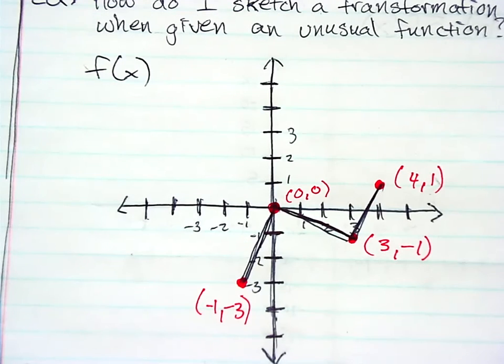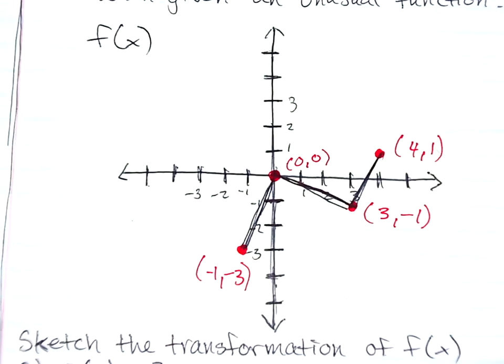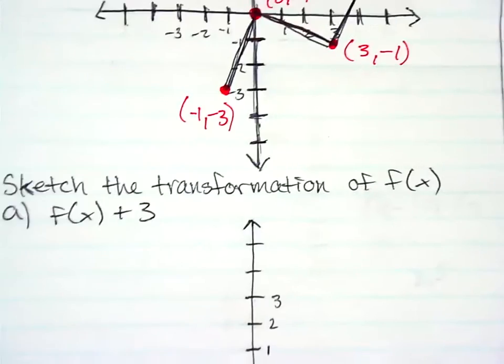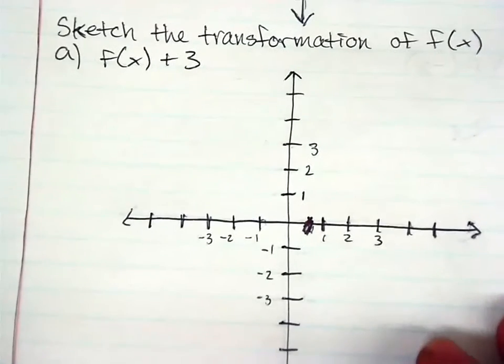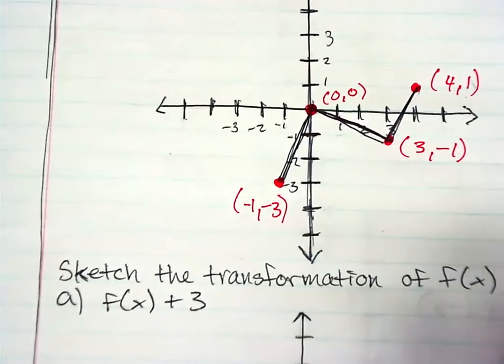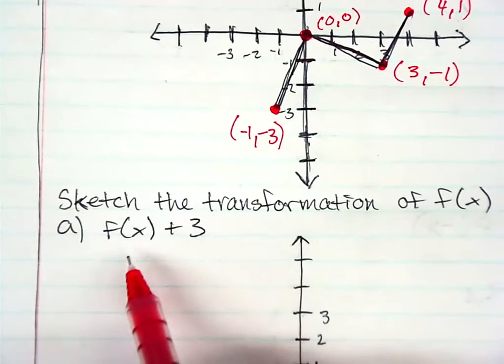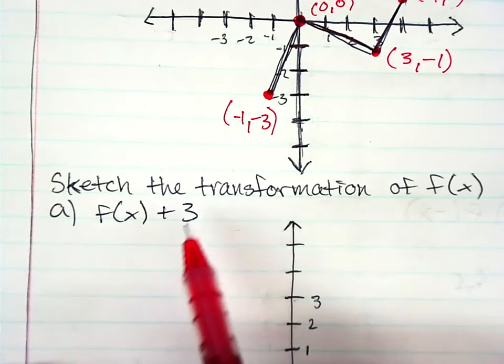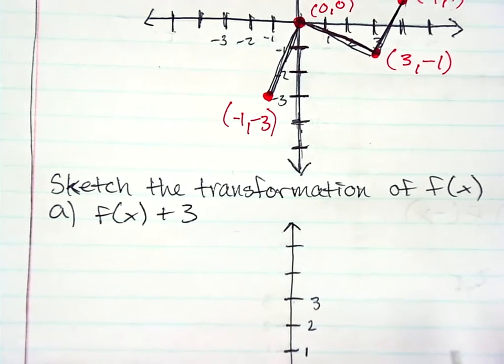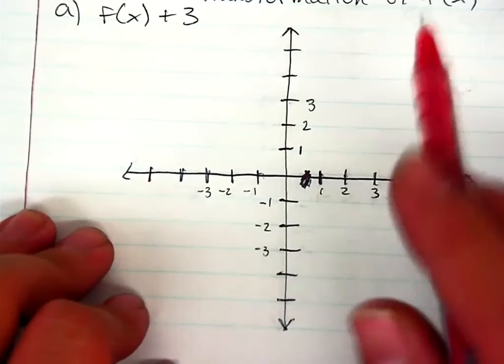Now, today the points are going to be especially important because we don't have our parent function to base our sketch off of. This essentially kind of becomes our parent function even though it's just a really weird lopsided one. So, coming down to the first transformation, we have f(x) + 3. In other words, I want to move all of these points upwards by 3. So remember, if you have the original function and add a number to it or add a constant to it, you're shifting that entire function upwards.